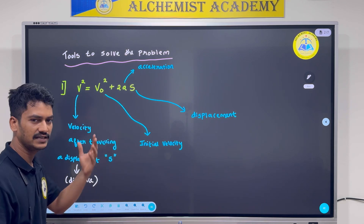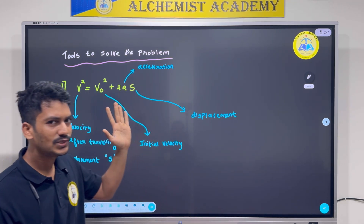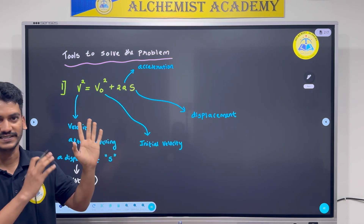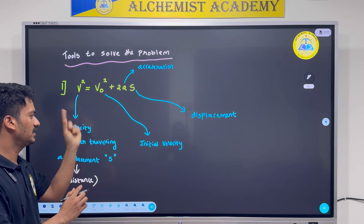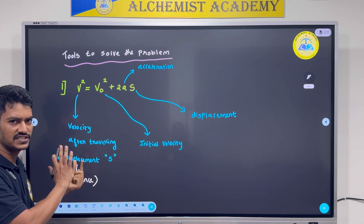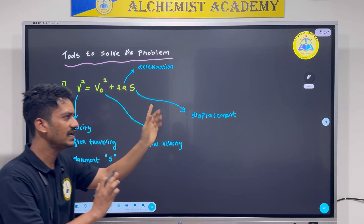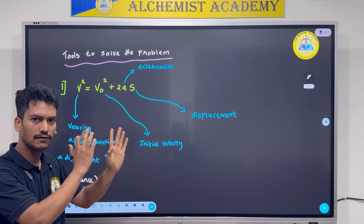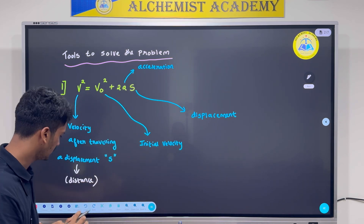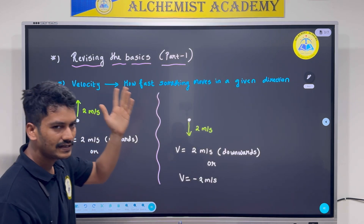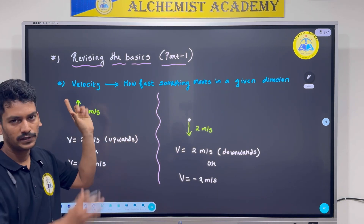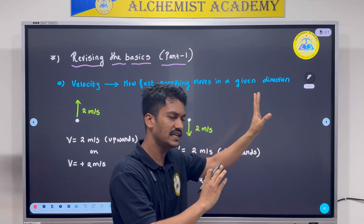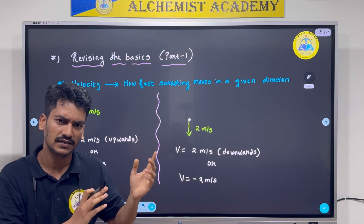The tool I require is this basic equation. I know you all hate equations, but these are our basic tools in physics. This equation relates the velocity after travelling a distance s with the initial velocity and acceleration. I will quickly revise the terms present in this equation. Velocity is how fast something moves in a given direction — it's speed with a given direction.